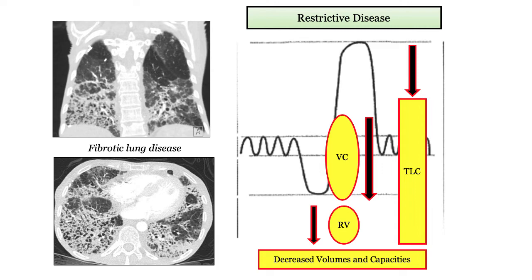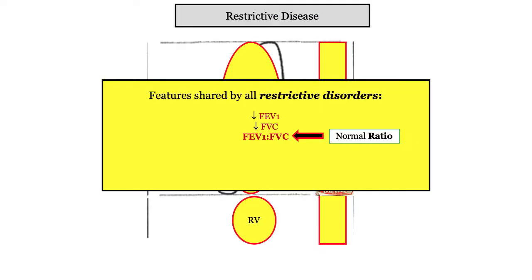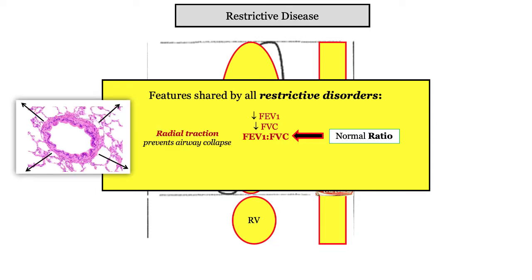Pictured are images of fibrotic lung disease — it is easy to envision volume loss. Insofar as airflow, the FEV1 is decreased, as is the forced vital capacity. But the FEV1 to FVC ratio is preserved. A favorite derivative specifically asks why the ratio is preserved: radial traction on the airway. Collagen fibers in the fibrotic lung literally prevent the airway from collapsing.